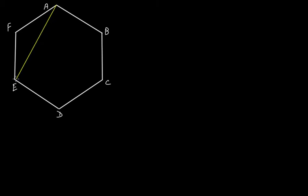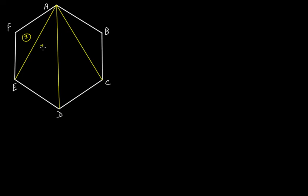So, this is A, this is B, let us say this C, this D, this is E and this is F. From this point, let us draw it here. Triangle 1, triangle 2, triangle 3 and triangle 4.